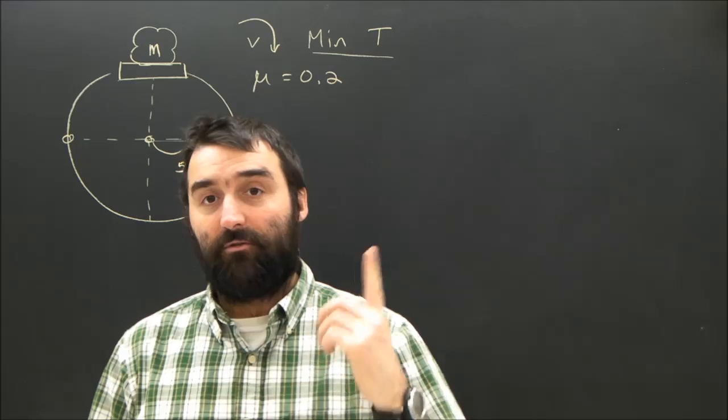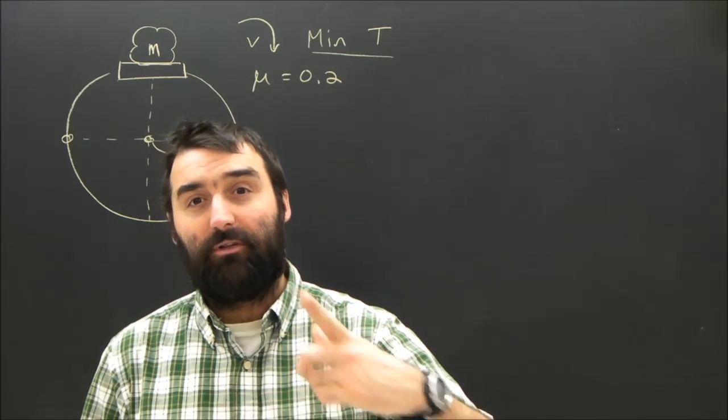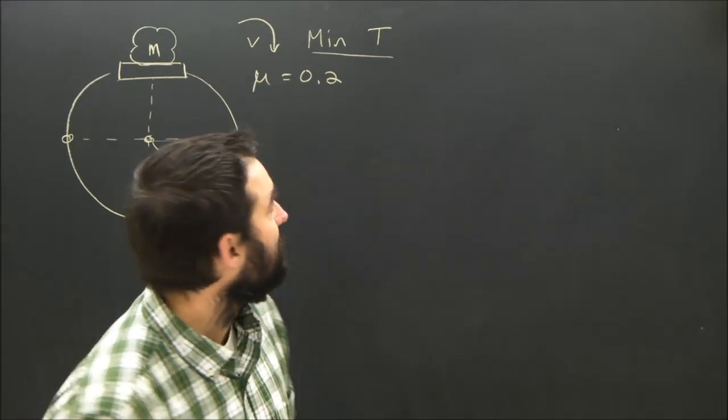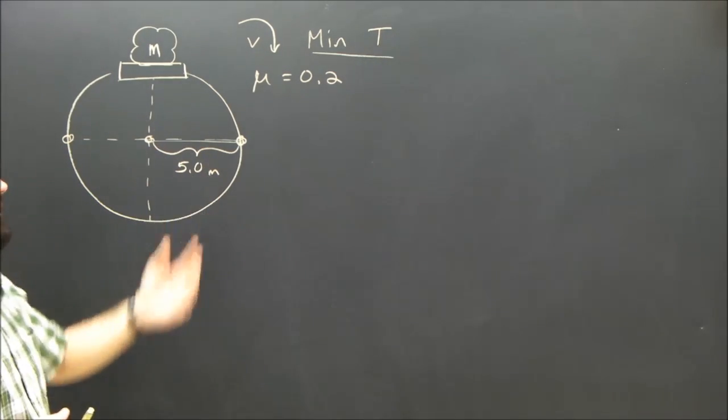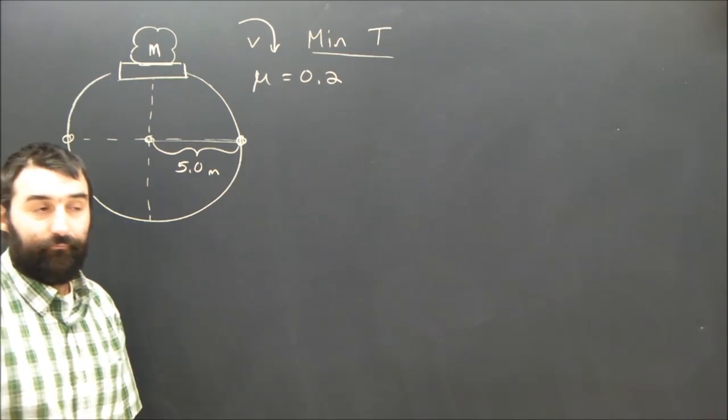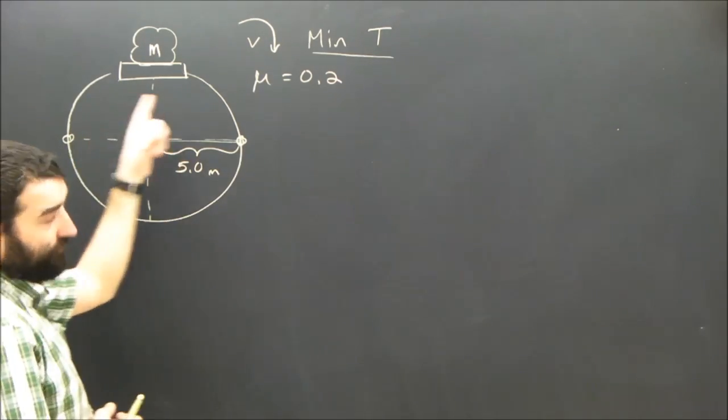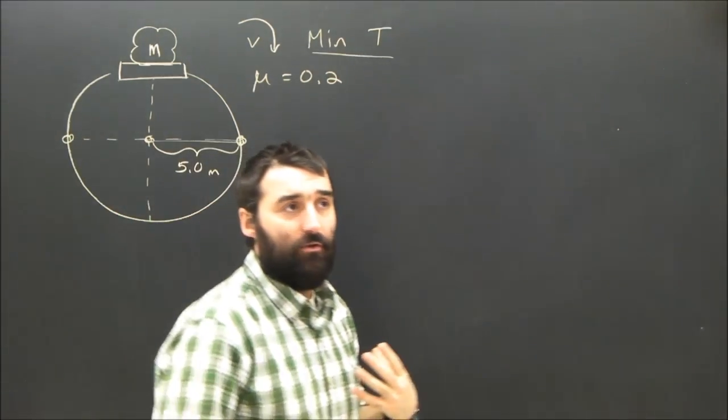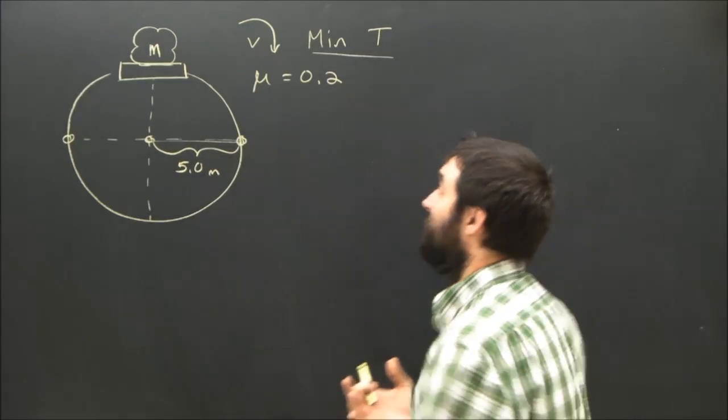We're going to assume a few things. We're going to assume that the roller coaster is speeding up really slowly and gradually. So the question really becomes where will this thing slip? The only thing keeping it on, of course, is friction, and the only reason it would want to fly off is because the rock has inertia.